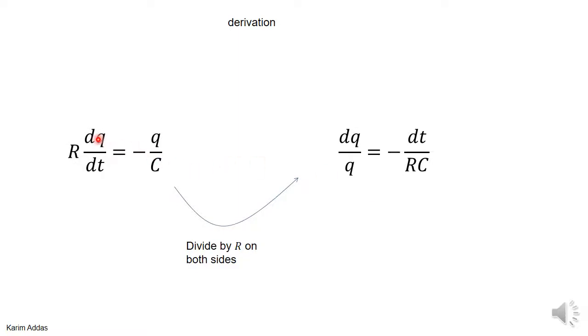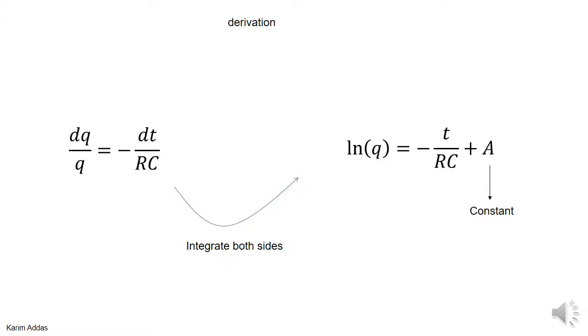So you get dq/q equals minus dt/(RC). This is already ready to integrate both sides. Now if you take this equation and integrate both sides.